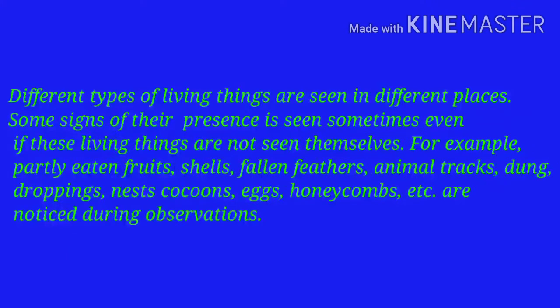Different types of living things are seen in different places. Some signs of their presence are seen sometimes even if these living things are not seen themselves — e.g. partly eaten fruits, shells, fallen feathers, animal tracks, dung, droppings, nests, cocoons, eggs, honeycombs etc. are noticed during observations.